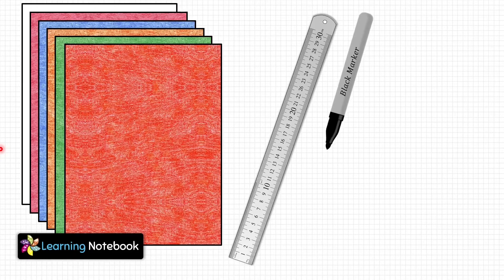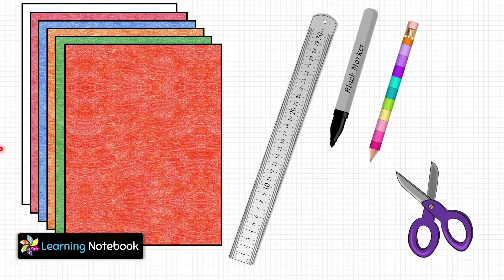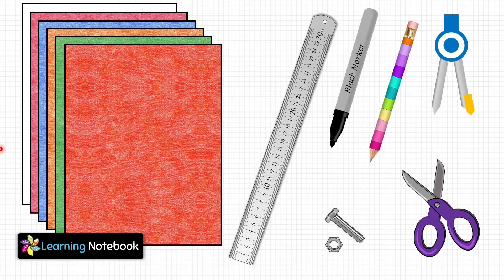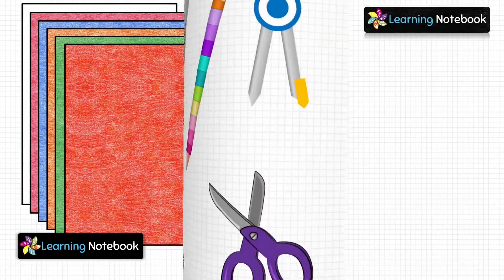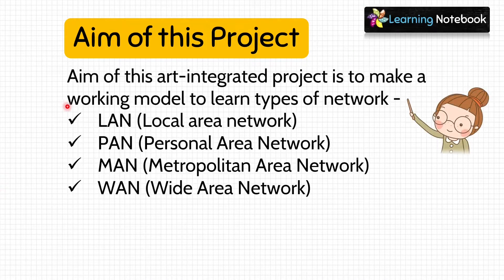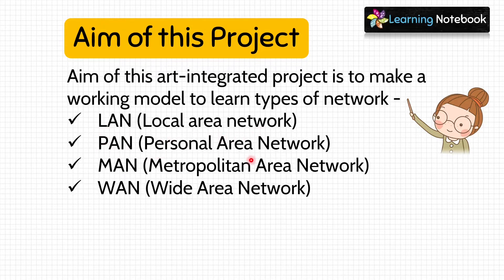For this activity we need a few thick chart papers, some thick A3-size sheets, a ruler, a black marker pen, a pencil, a pair of scissors, a compass, and nut and bolt. The aim of this art-integrated project is to make a working model to learn types of network.